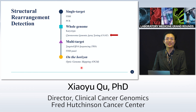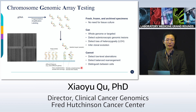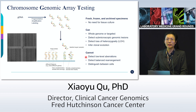Now we move to chromosome genomic array testing, or CGAT. CGAT takes high molecular weight genomic DNA through fragmentation, amplification, and labeling. The labeled DNA fragments bind onto a wafer where we read out signal to determine copy number or allelic status. This assay can run on fresh, frozen, or archived specimens without tissue culture, making it very versatile. It can be whole genome or targeted, can detect submicroscopic genomic lesions and loss of heterozygosity, and can infer clonal evolution from different aberration levels — though not definitively. It cannot detect low-level aberrations, balanced rearrangements, or distinguish between individual cells.